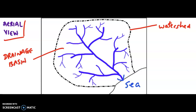By definition, a drainage basin, as the name suggests, refers to an area which is in fact drained by multiple streams, tributaries, or even rivers, and they are bordered by a watershed.